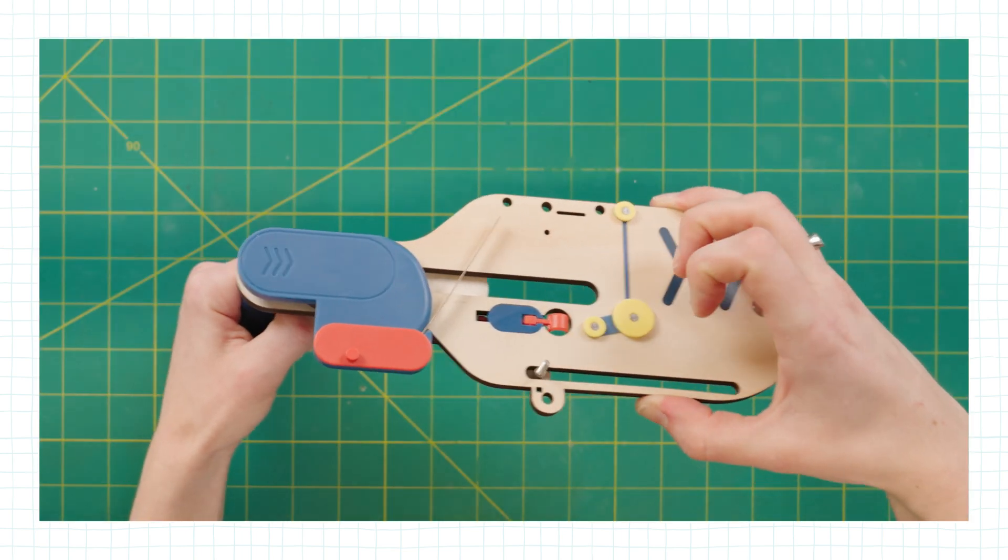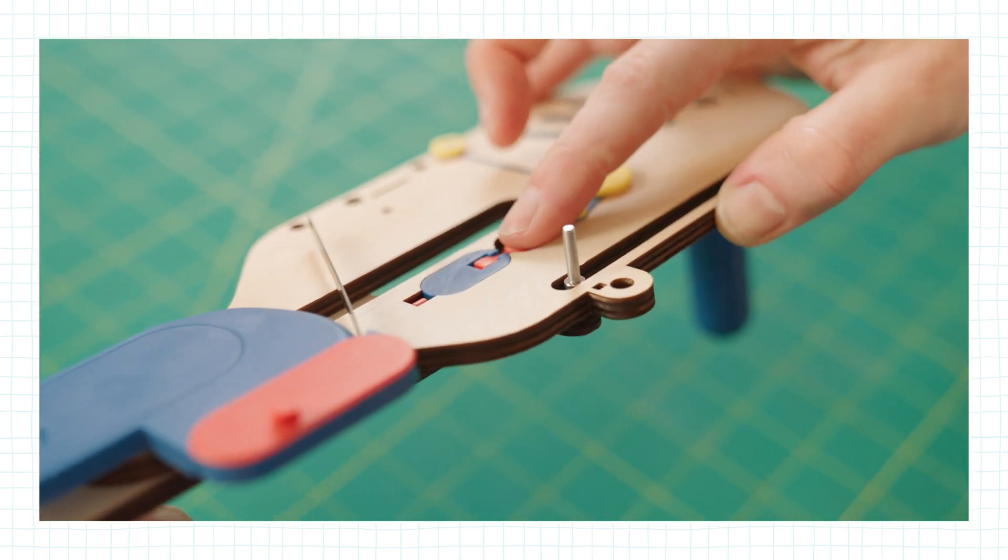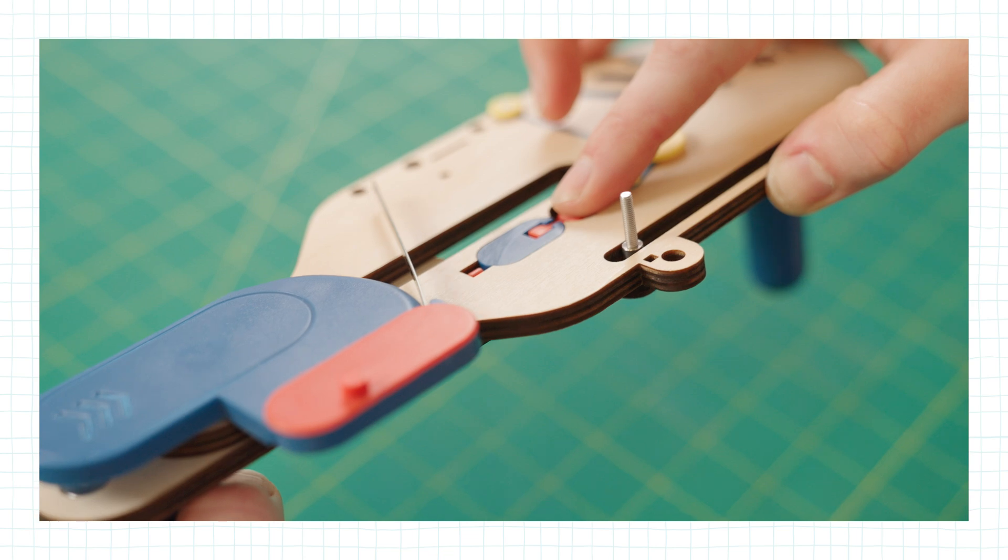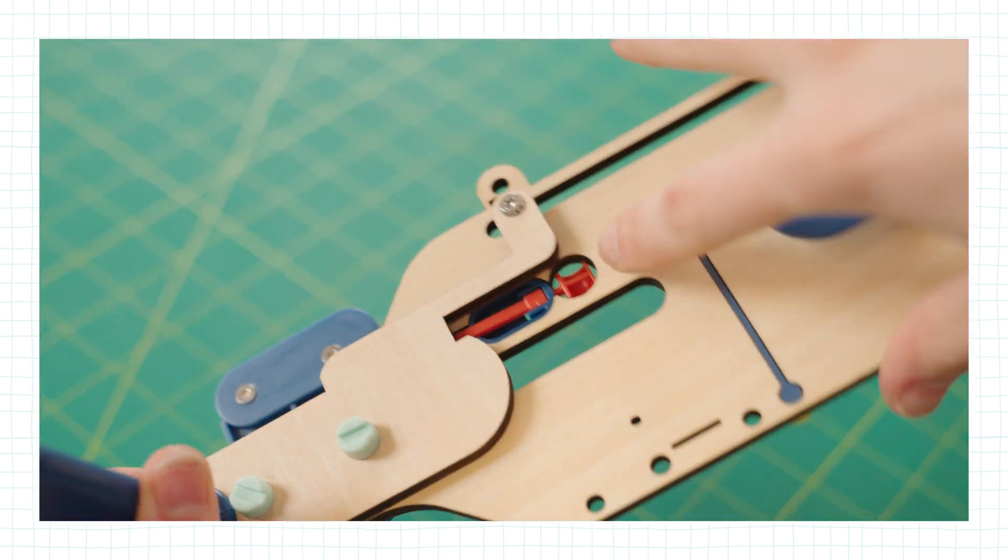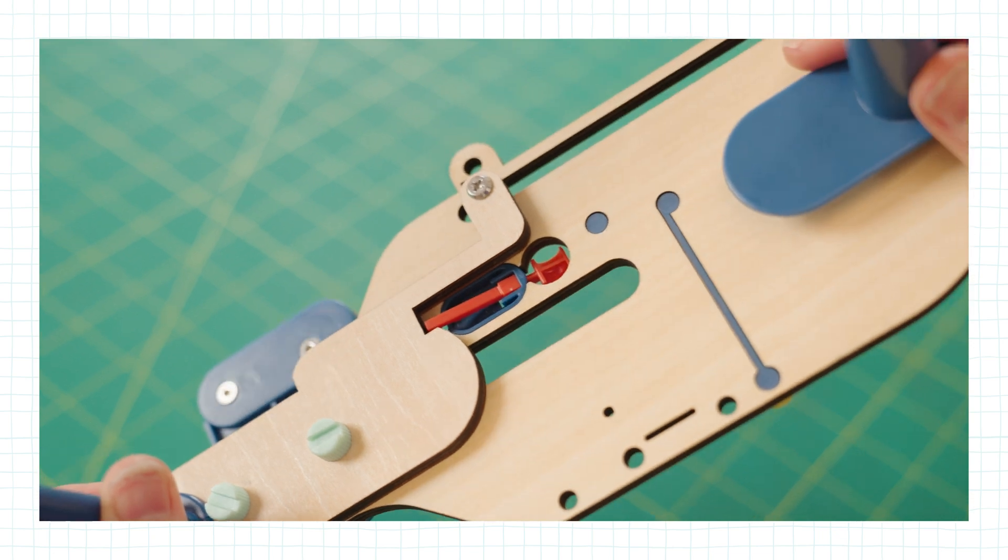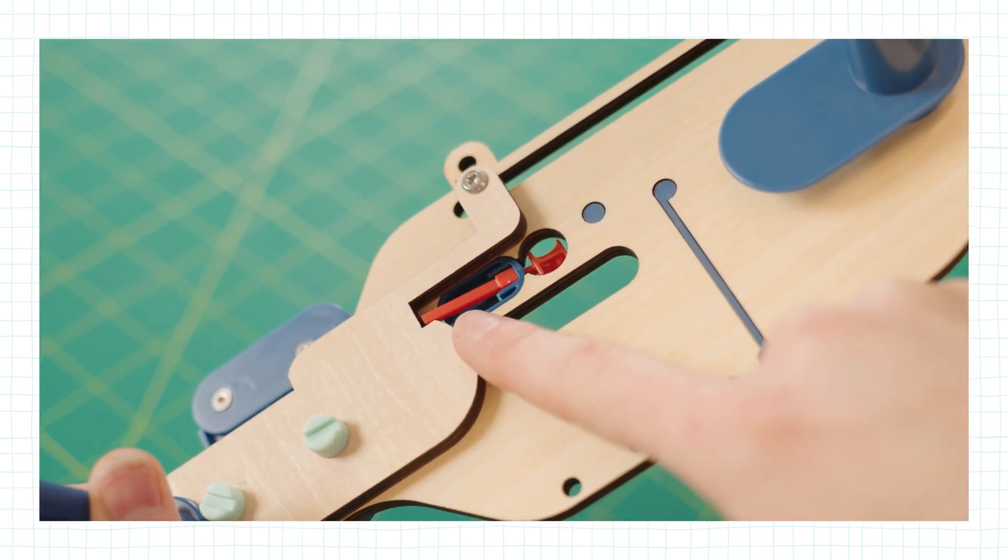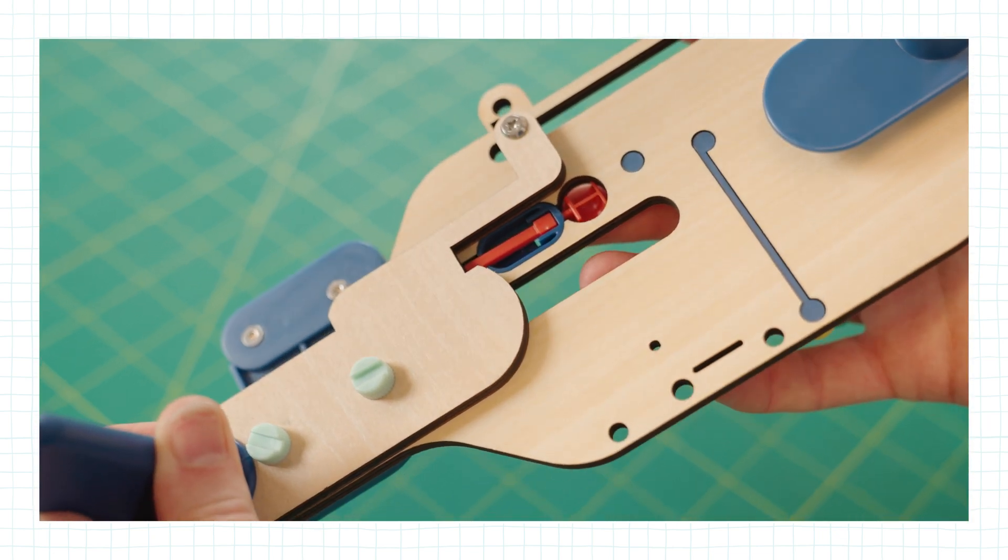If you pull it all the way back and try to push it forward, it shouldn't fire. This safety feature makes sure that it doesn't fire without a disc in it. So if you flip it over, you can see this little red arm prevents it from sliding forward when there's nothing pressing it down. Ta-da! Safety first!